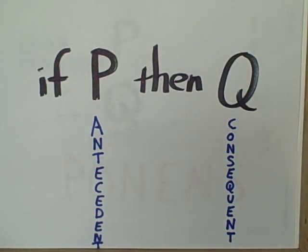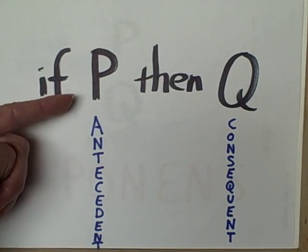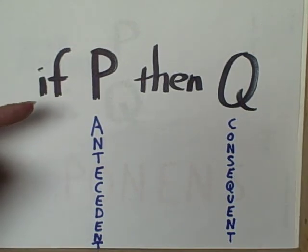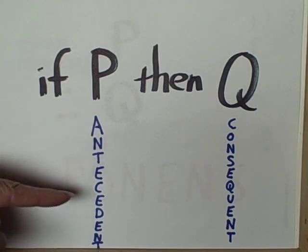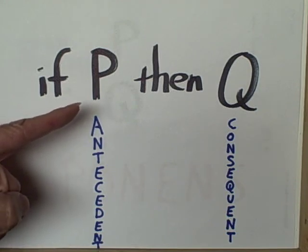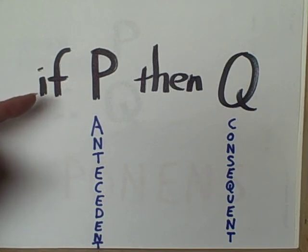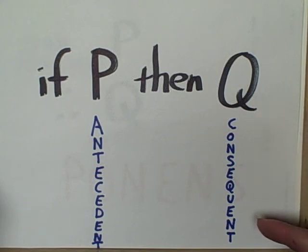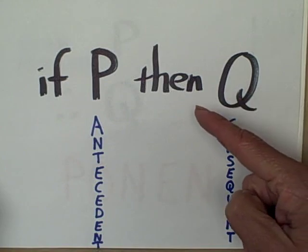Today we are talking about conditional statements. The conditional statement is in the form of if P, then Q. The letter P symbolizes our antecedent, in other words the first statement, the statement following the if. The letter Q symbolizes the consequent, our second statement, following the word then.